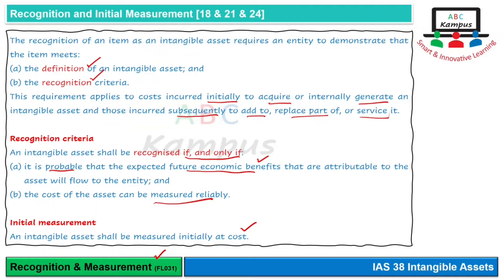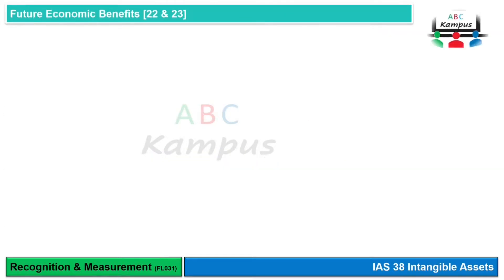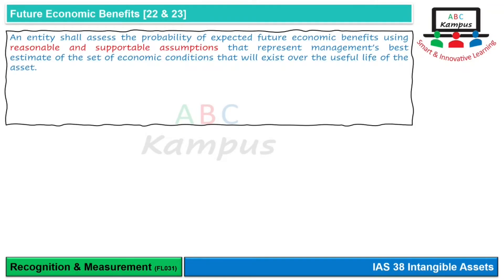The recognition criteria require probable future economic benefits and reliable measurement of cost at initial recognition. An entity shall assess the probability of expected future economic benefits using reasonable and supportable assumptions — not exaggerated estimates such as claiming millions in traffic — but based on reporting evidence and the best estimate representing economic conditions useful over the asset's life.